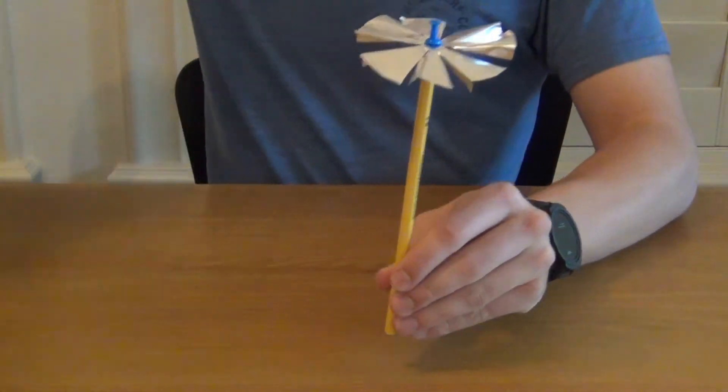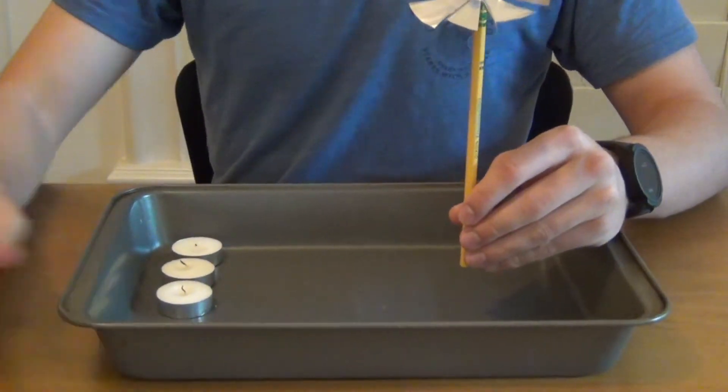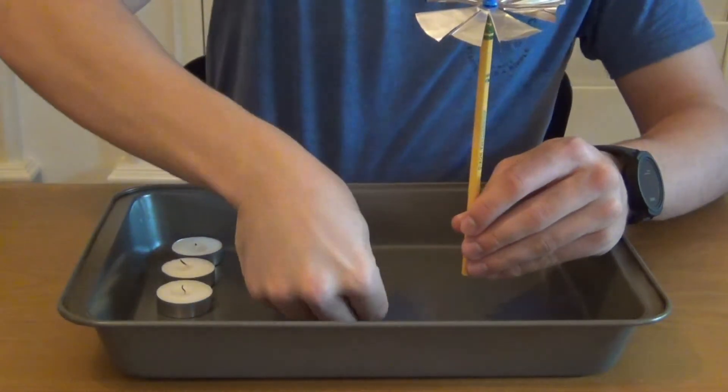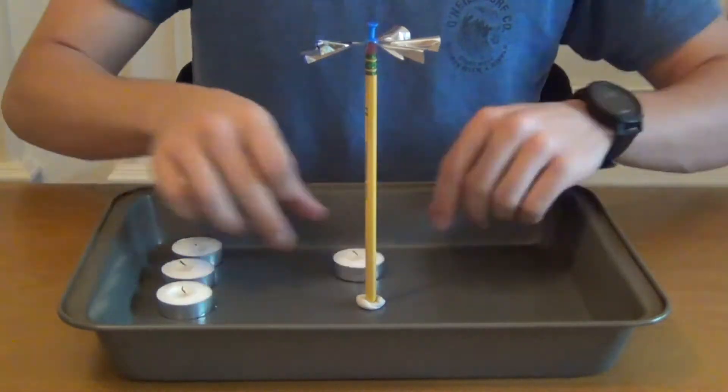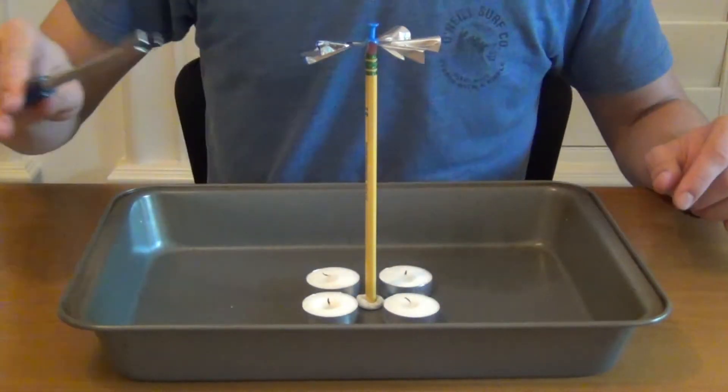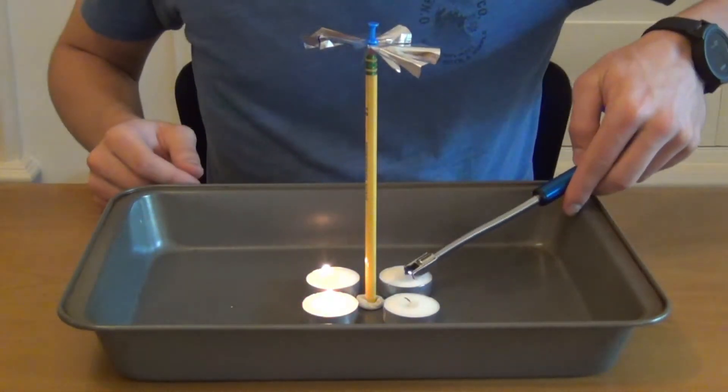Then get your tray and sticky putty. Put the sticky putty in the center of the tray, and put the pencil into the sticky putty, so that it's sticking up. Once you've done that, place the four candles around the pencil and light each one.